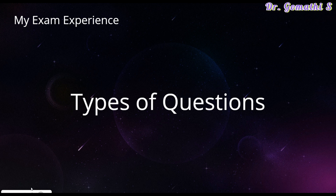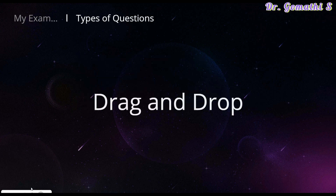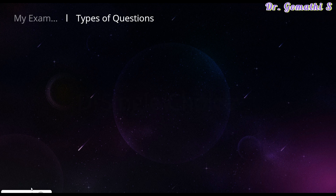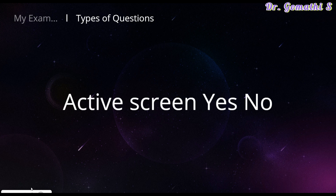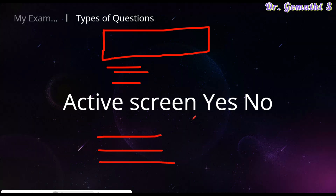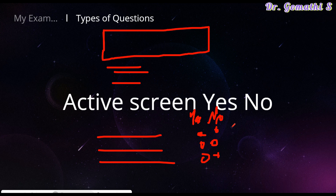The types of questions I encountered were: drag and drop, select from a dropdown, single choice, multiple choice, and active screen (yes/no). The active screen differs from the hotspot — in active screen, they give you a scenario and code with three or four statements, and you choose which statements are yes and which are no.